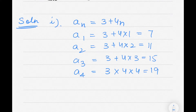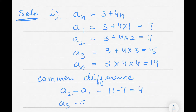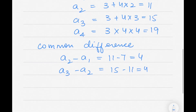Checking the common difference: a2 − a1 = 11 − 7 = 4; a3 − a2 = 15 − 11 = 4; a4 − a3 = 19 − 15 = 4. Since the common difference is the same throughout, the sequence forms an AP.